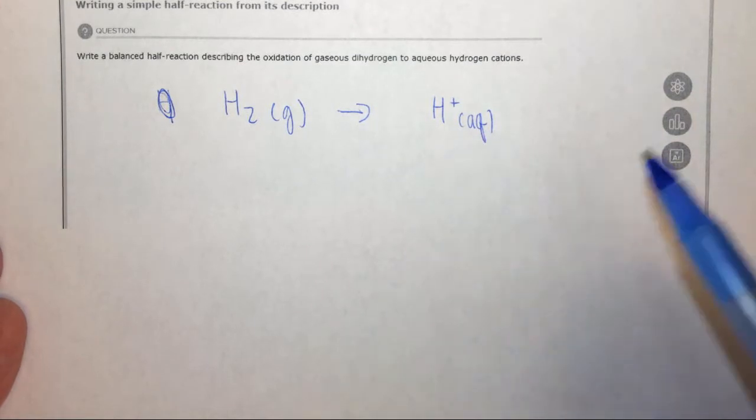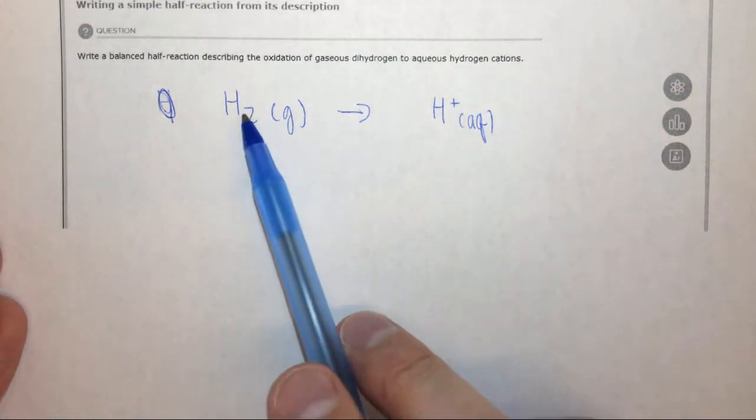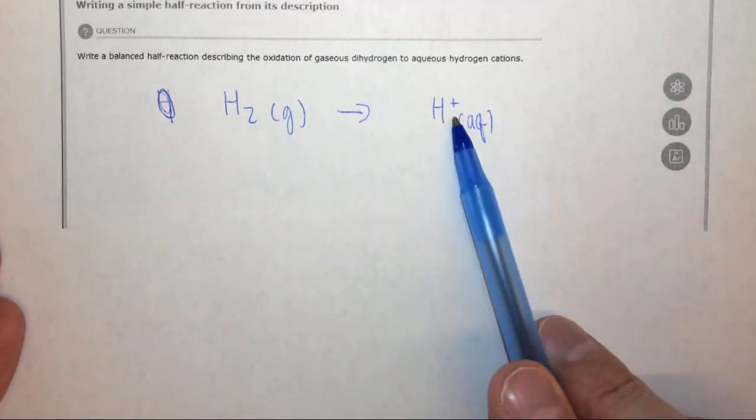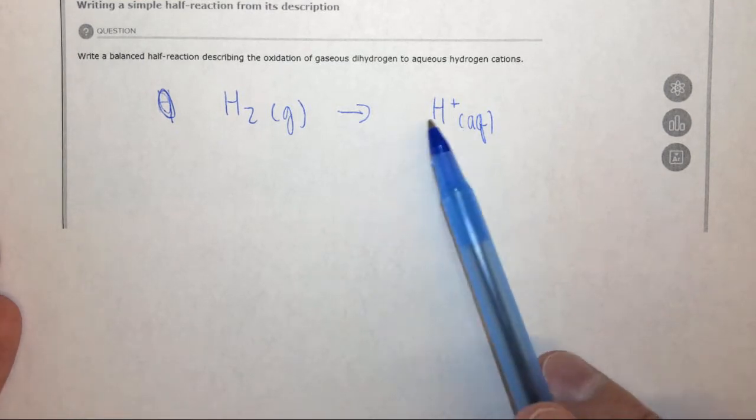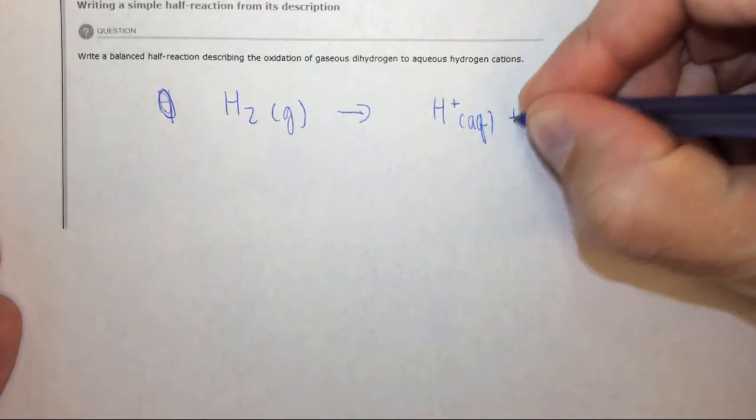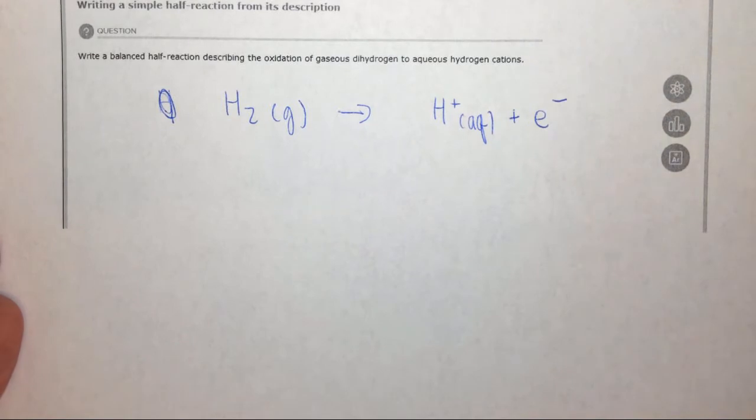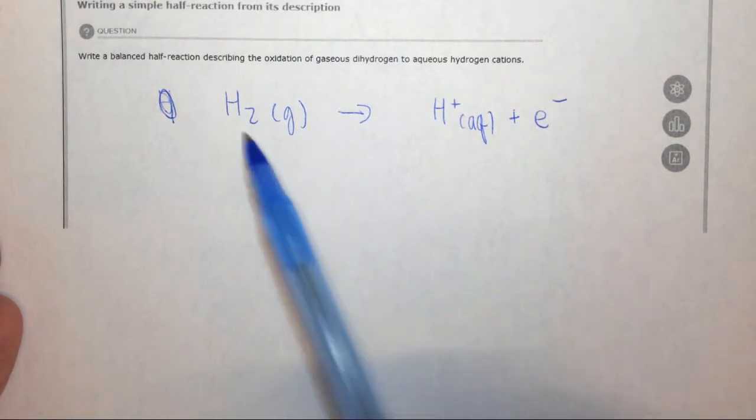These are hydrogen cations. In order to go from H2 to H+, we must have lost an electron. So we can add an electron because an electron must have also been lost.